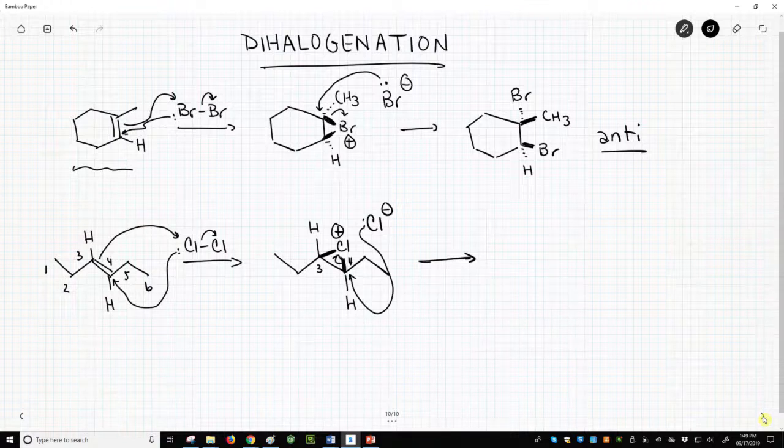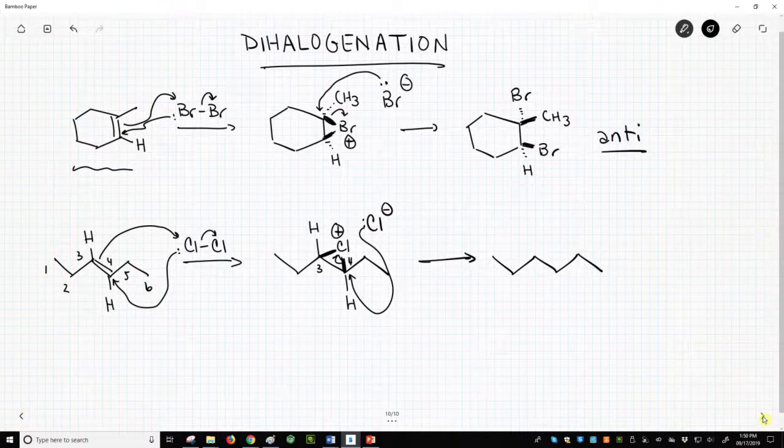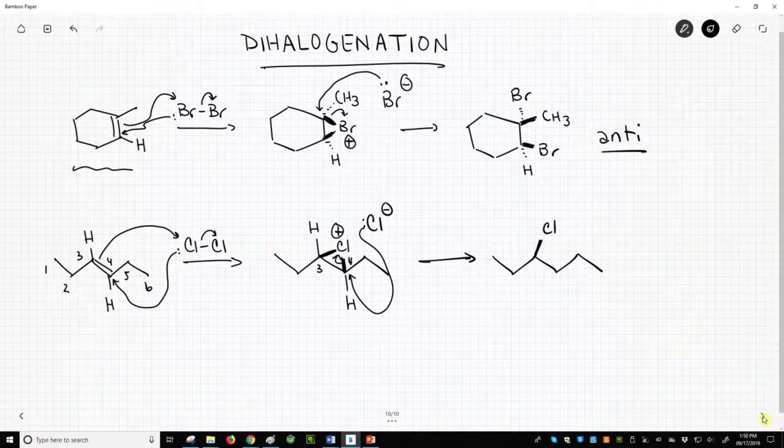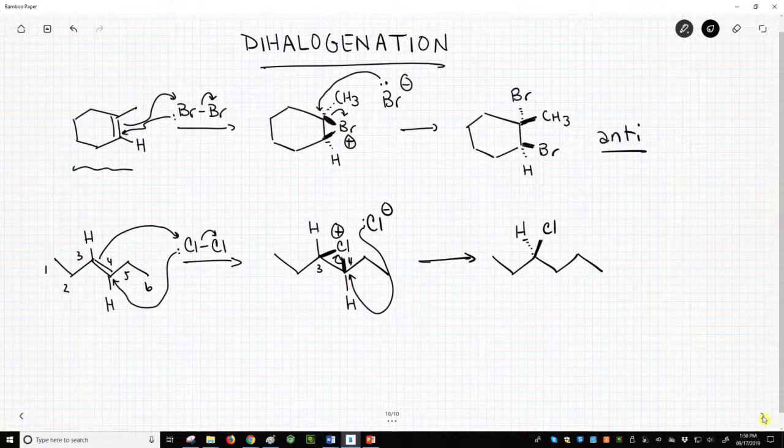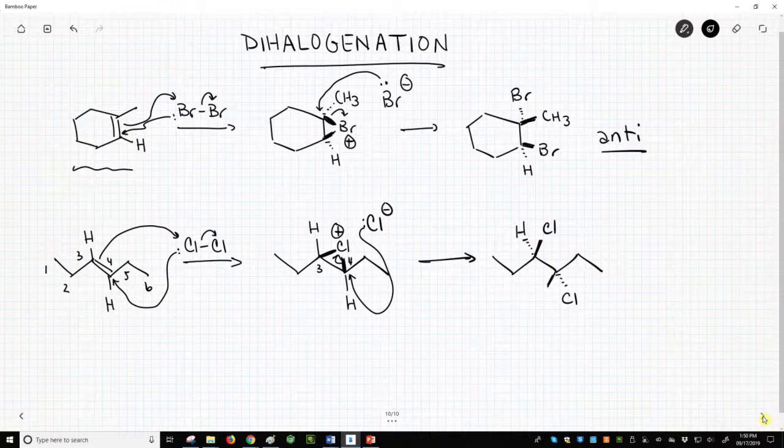When we draw the product, we'll keep the main chain the same. Carbon 3 will have the chlorine up, so the hydrogen must be down. Carbon 4 will have the chlorine back because it came in from the back face, and the hydrogen will have been pushed up.